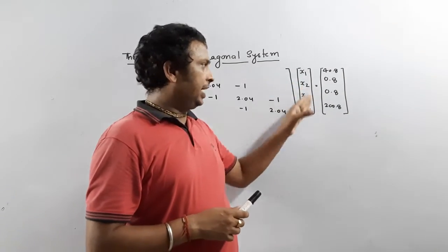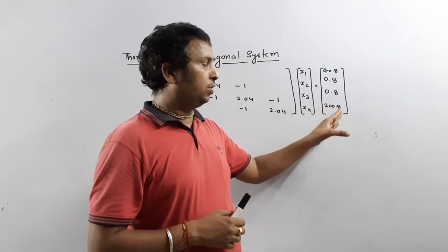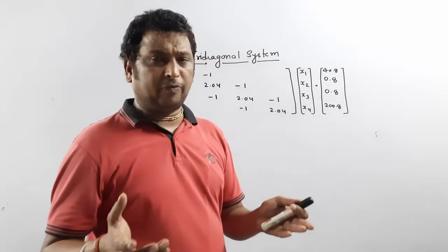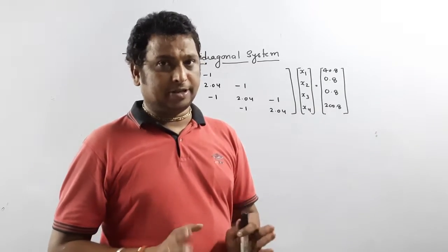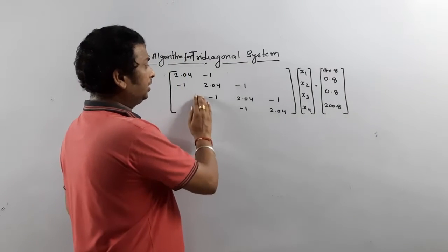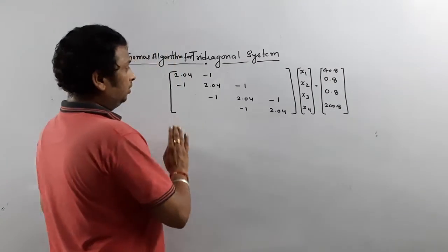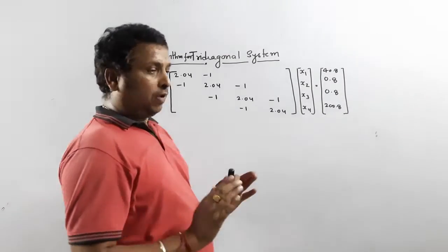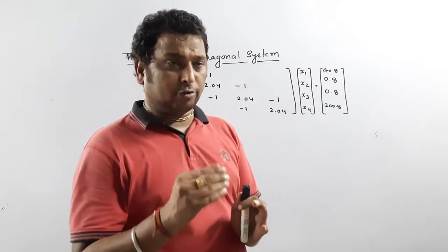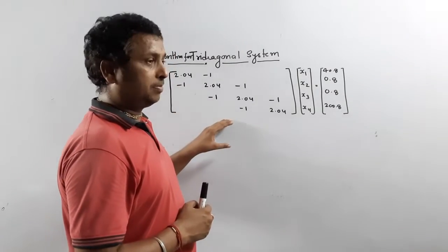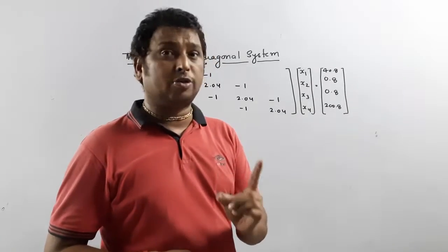Since this is a 4x4 matrix, we have four unknowns x1, x2, x3, x4, and a right-hand side value. It is just of the form Ax = B, but the only thing is that the given system is a tri-diagonal system — only three diagonal elements are present and all remaining elements must be zero. The Thomas algorithm methodology is very easy; if you know just three basic steps, it is very similar to the Gauss elimination method.